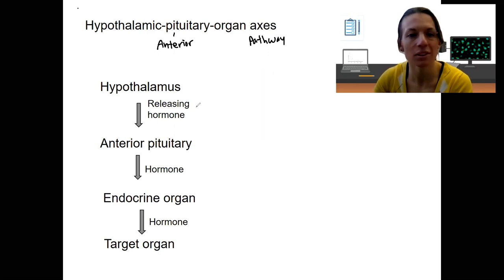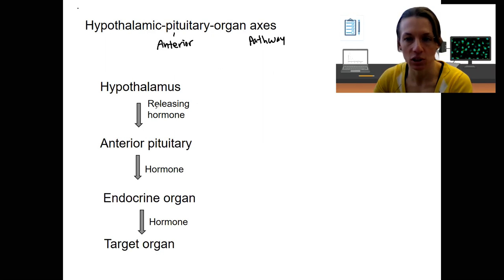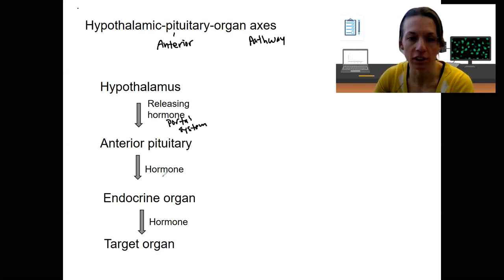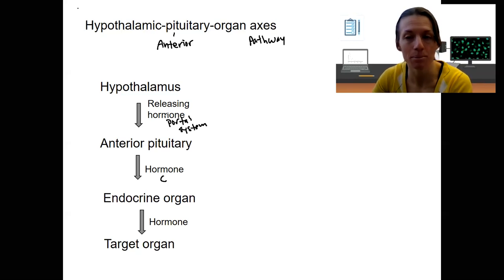The hypothalamus releases a releasing hormone — it also could release inhibiting hormones, but we're going to focus on the stimulation, so releasing hormones. That releasing hormone is going to target the anterior pituitary via that local portal system. The anterior pituitary is going to release a hormone into circulation — a true hormone. This is a hormone because it's going into the bloodstream. It's not a paracrine, which only relies on diffusion to contact local tissues nearby.